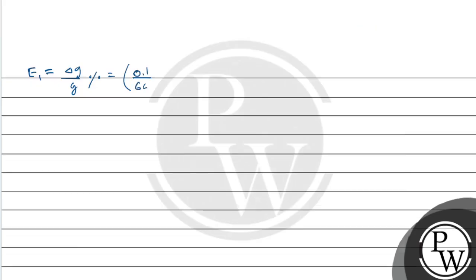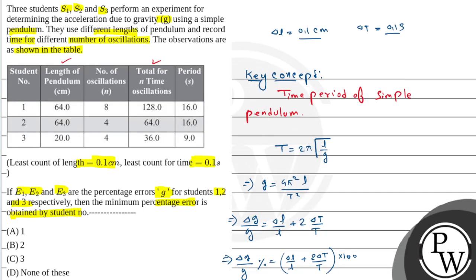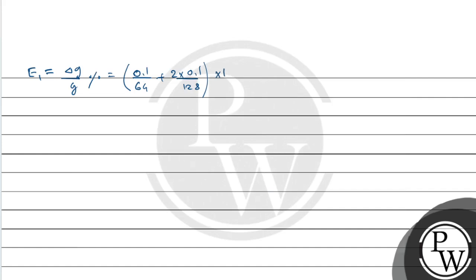First student's length was 64 and time is 128. So 0.1 by 64 plus 2 into 0.1, least count of time, by 128 into 100. E1's value is 0.3125 percent.